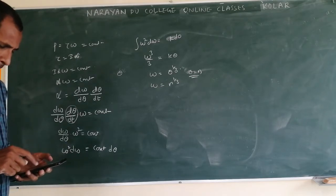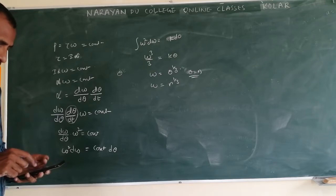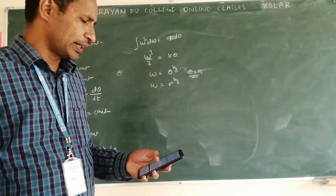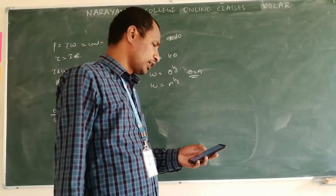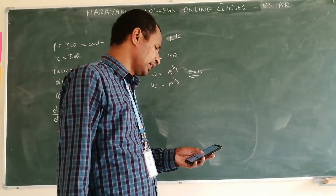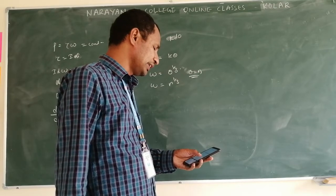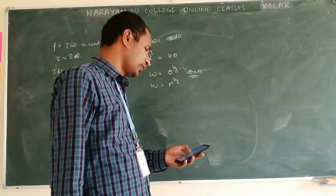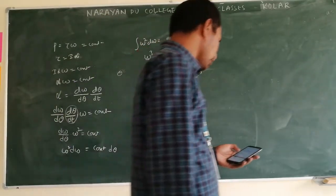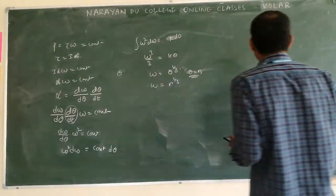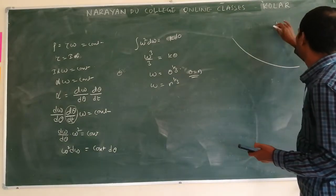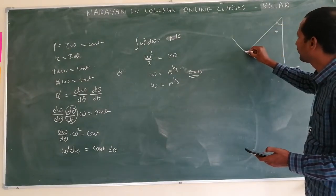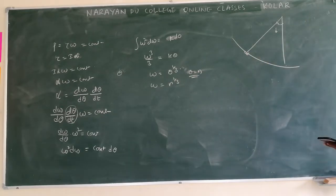Come to this question. An insect travels up a hemispherical surface very slowly. The coefficient of friction between the insect and the surface is 1 by 3. If the line joining the center of the hemispherical surface to the insect makes an angle alpha with the vertical, the maximum possible value alpha. They give a question like this. This is hemispherical, here it is alpha. Here one insect is crawling, right? They are asking this relation.